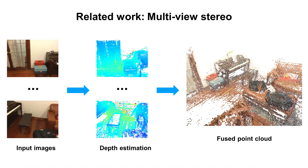Traditional methods mostly adopt a multiview stereo pipeline. Given a set of images, we first estimate per-view depth maps based on multiview image matching, and then perform depth fusion in 3D space. While these methods have shown great results on ideal scenarios, they have difficulty reconstructing low-textured, specular, and reflective regions,